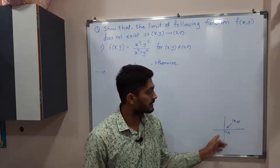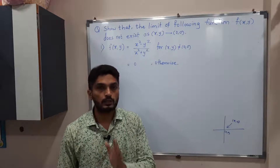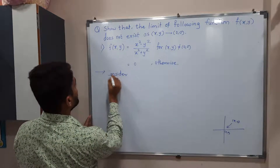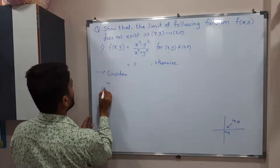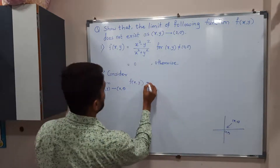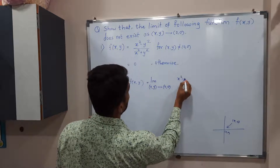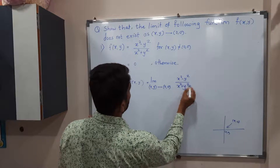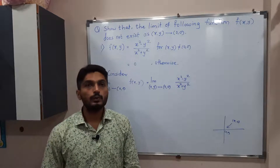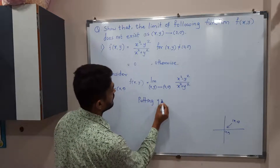There are many ways (x,y) can approach (0,0) — from many different sides. We have to prove that the limit does not exist. So let us start. Consider the limit as (x,y) tends to (0,0) of f(x,y). We have two variables, so I'm going to convert this problem into a single variable by putting y = mx.